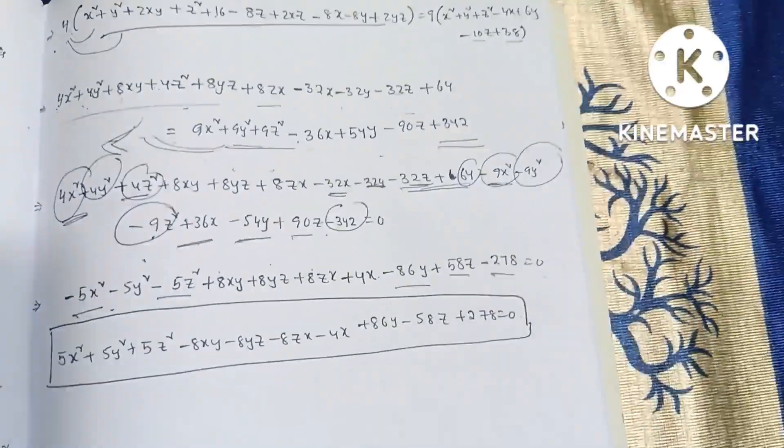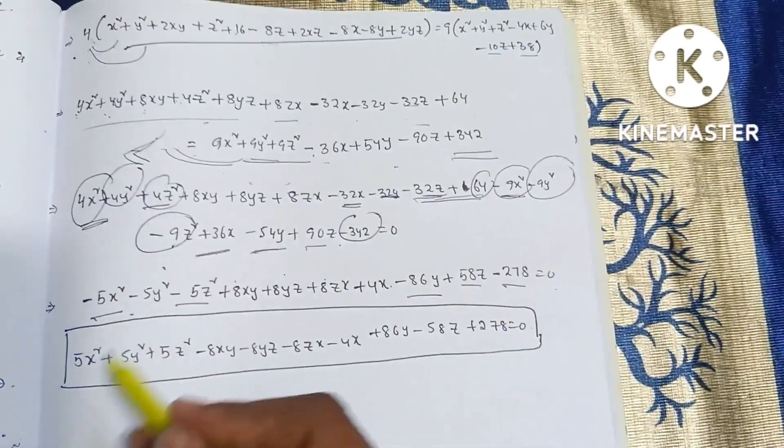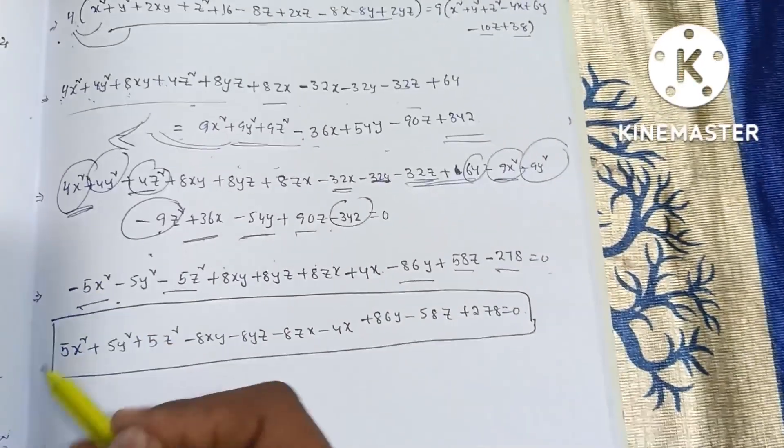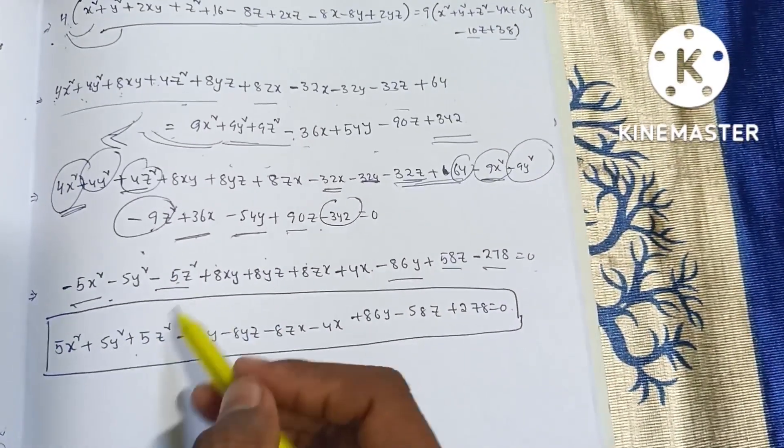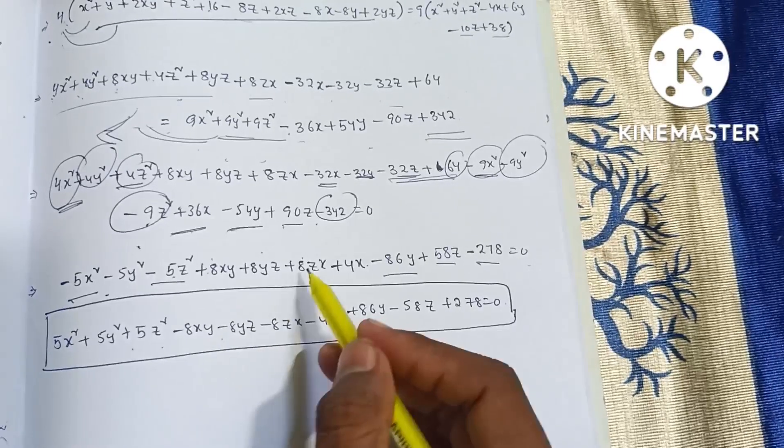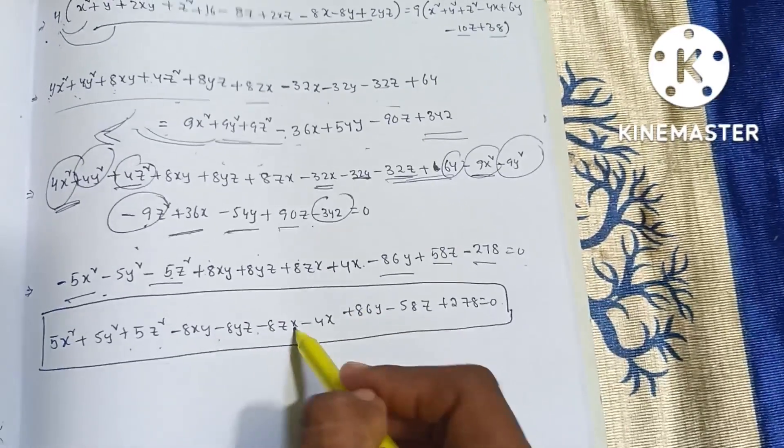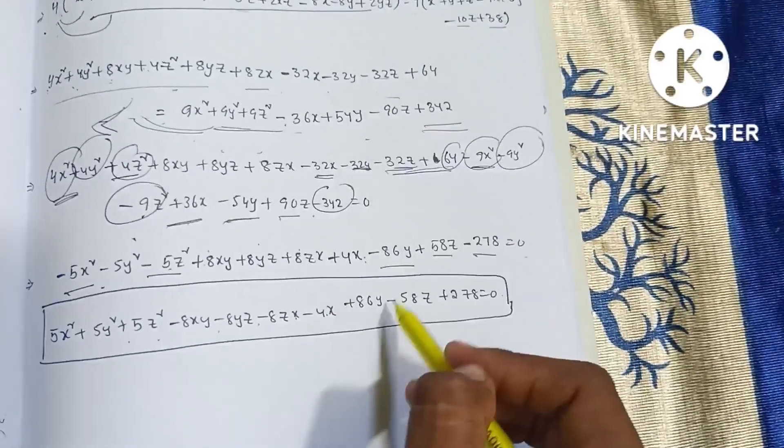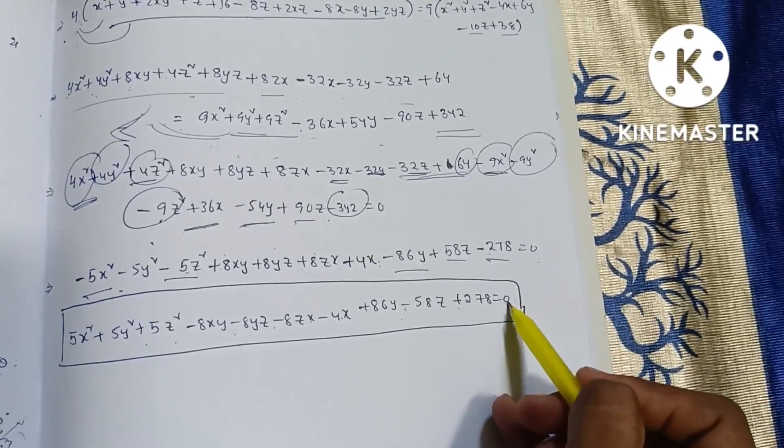So minus to plus, plus to minus. 5x square plus 5y square plus 5z square minus 8xy minus 8yz minus 8zx minus 4x plus 86y minus 58z plus 278 is equal to 0.